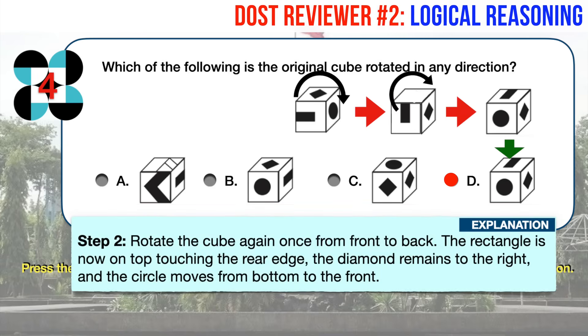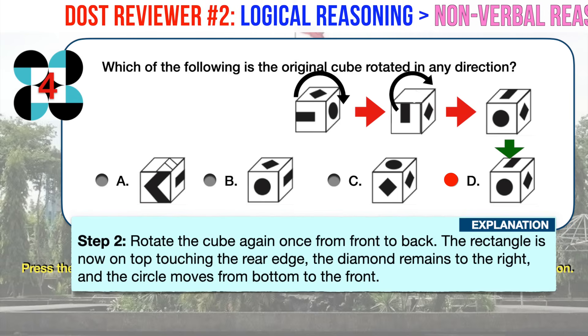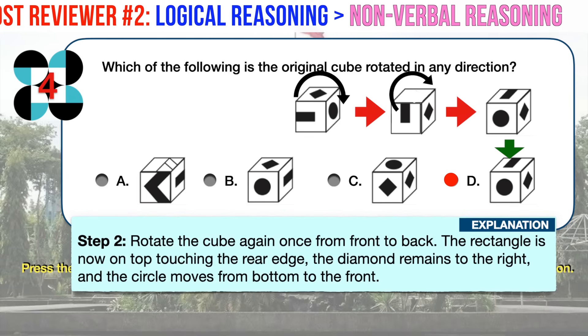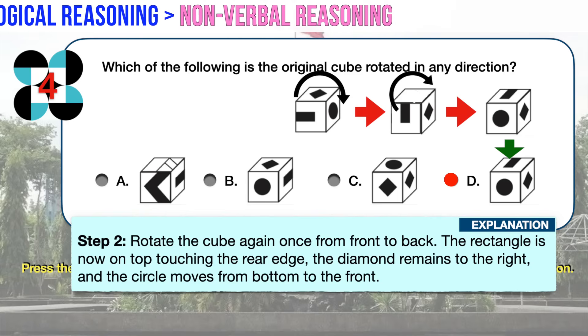Step 2, let's rotate the cube again once from front to back. The rectangle is now on top touching the rear edge, the diamond remains to the right, and the circle moves from bottom to the front. This is exactly the cube in answer choice D.